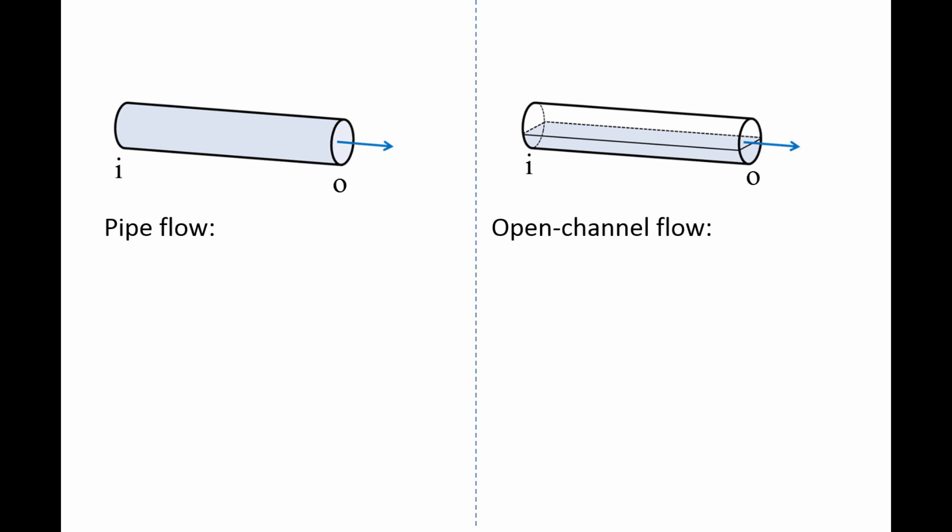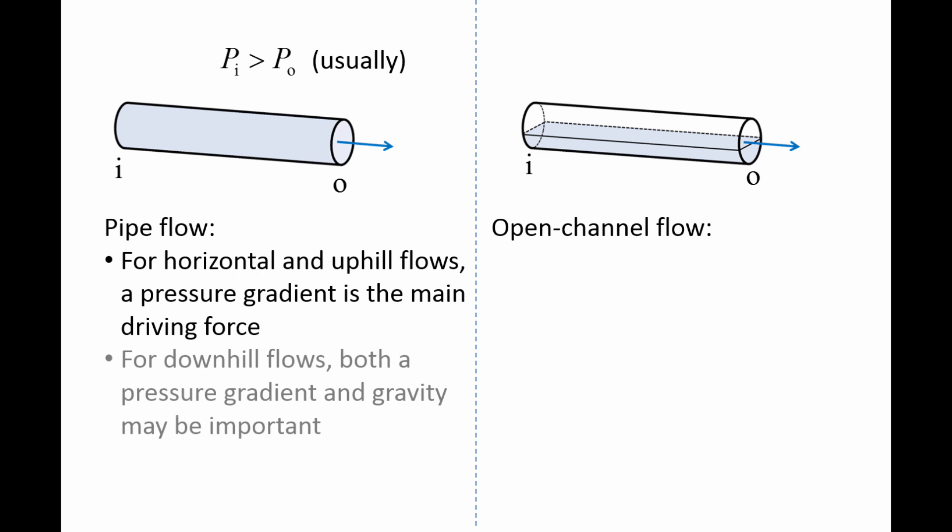We will refer to the left scenario as pipe flow and the right scenario as open channel flow. In pipe flow, the pressure at the inlet is usually greater than the pressure at the outlet. This pressure gradient provides the main driving force for transporting the fluid through the pipe system if the flow is horizontal or uphill. If the flow is downhill, both the pressure gradient and gravity may be important.